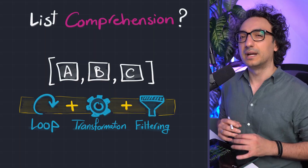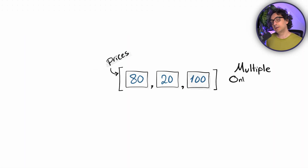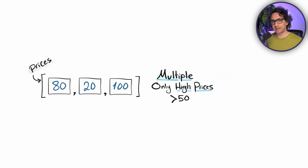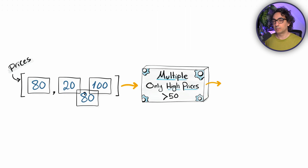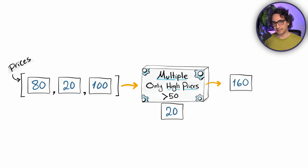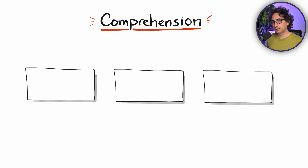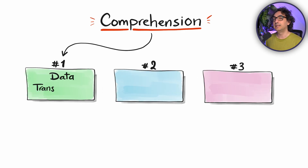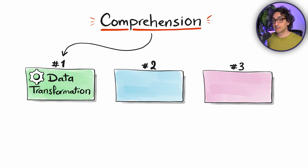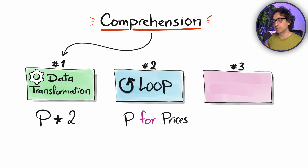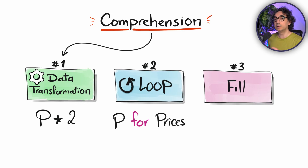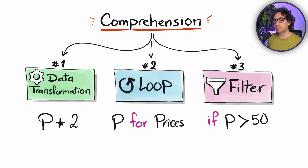Let's say we have a list of three prices and we want to multiply the prices, but only for the high prices — only if the price is higher than 50. So 80 becomes 160, 20 does not pass the test and won't appear, and 100 becomes 200. To build this in Python using list comprehension, you build three blocks in one line: the first block is your data transformation expression (price multiplied by two), the second is a simple for loop to iterate through the list, and the third is a filter using an if statement with the condition price greater than 50.